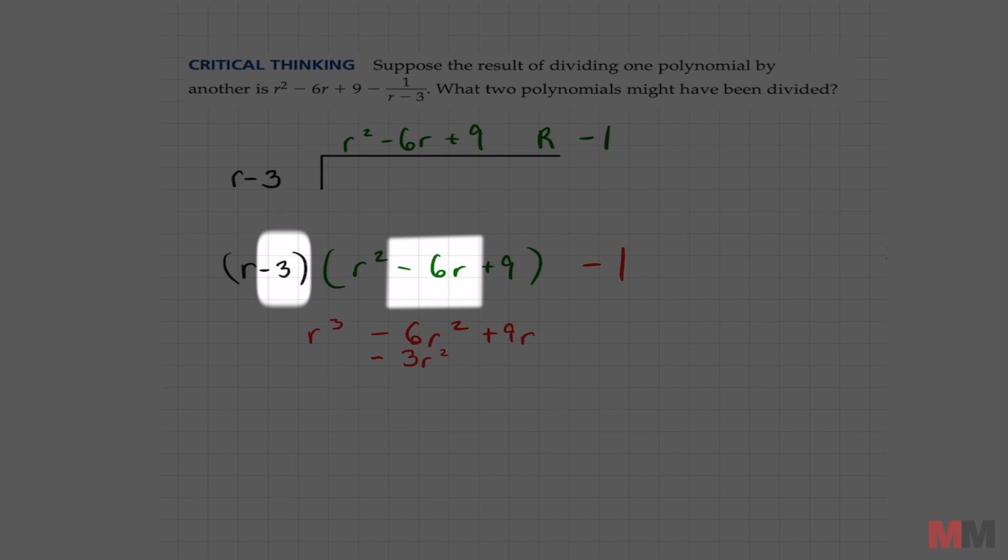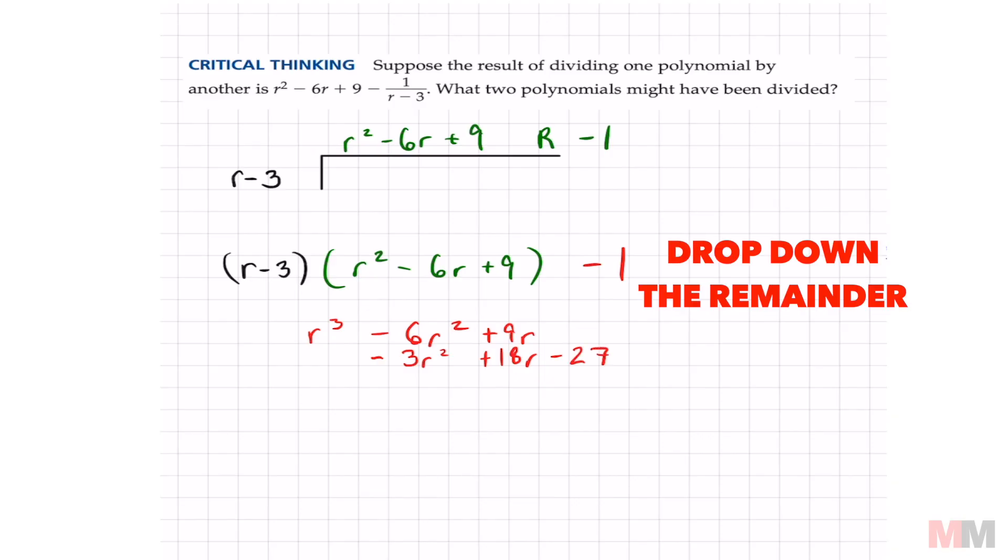Watch your negative signs. That's gonna be positive 18r, and negative 3 times 9 is negative 27. Do not forget your remainder, negative 1.